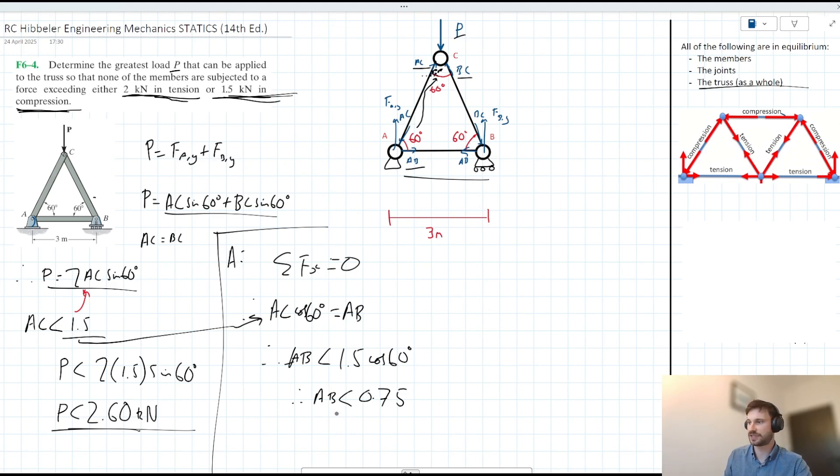Now, this is the value or the kind of maximum value of AB here when we're saying that we're applying 2.6 kilonewtons at force P here. Since that's the case, 0.75 is less than 2 kilonewtons. We could even write that down. We could say 0.75 is less than 2 kilonewtons. Therefore, P max equals 2.6 kilonewtons. Okay. And there we have it.